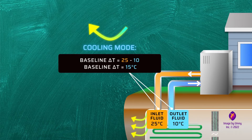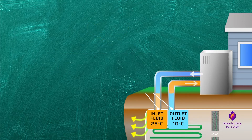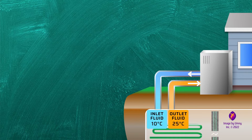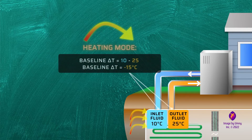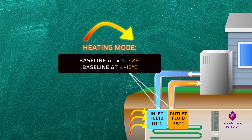Since the fluid traveled through the ground to become cooler than it was originally, this is called the cooling mode of operation, which has values that are positive. If the inlet fluid temperature started at 10 degrees Celsius and was warmed up by the ground to reach 25 degrees Celsius, then the baseline delta T is negative 15. The fluid has been heated by the geosystem, so this is the heating mode. Values in heating are negative due to the opposite direction of heat exchange compared to cooling.